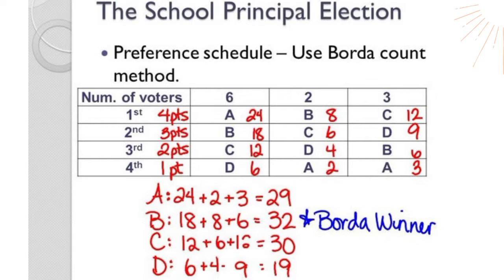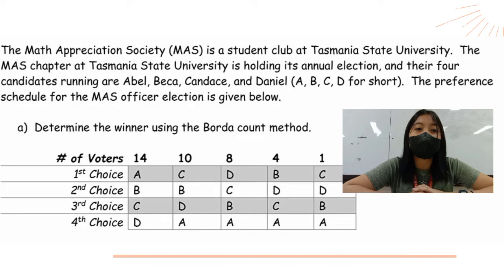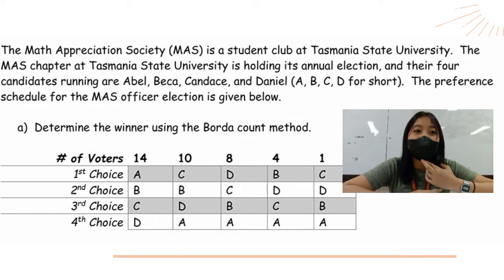For the last problem, the Math Appreciation Society is a student club at Tasmanian State University holding its annual election. The candidates running are Abel (A), Becca (B), Candice (C), and Danielle (D). The preference schedule for the mass officer election is given below.